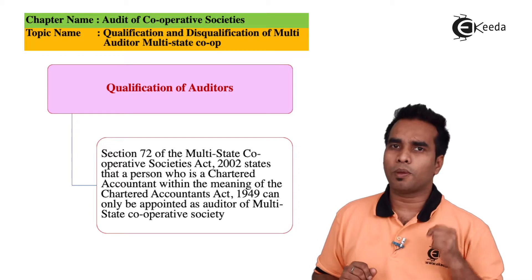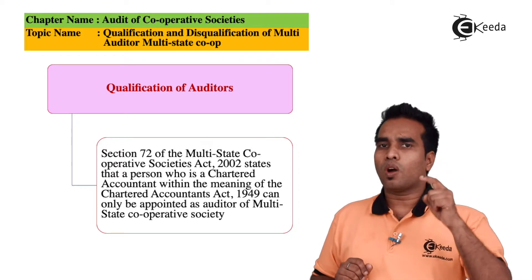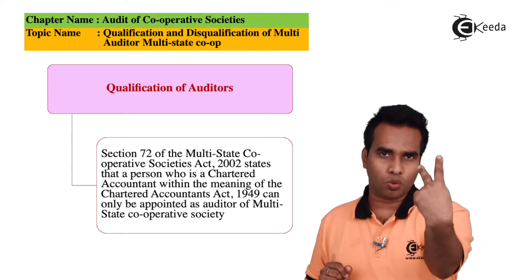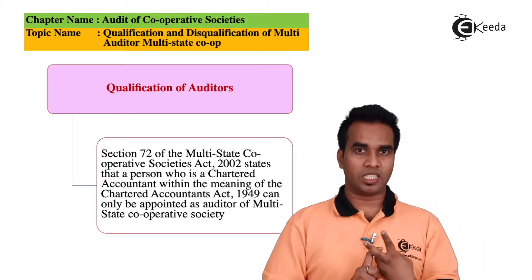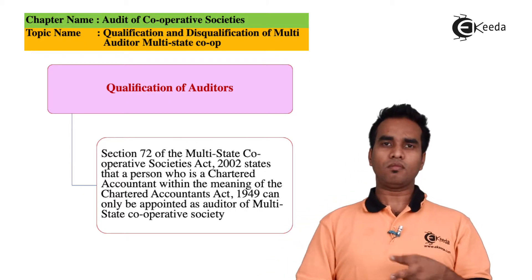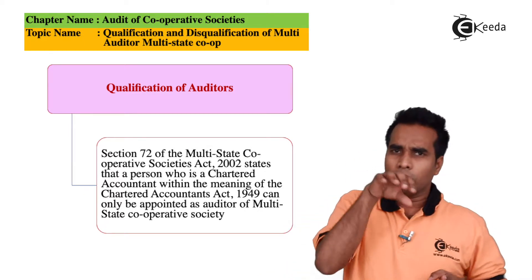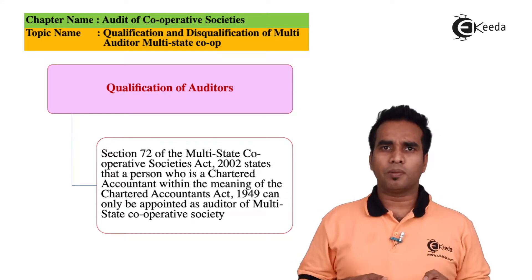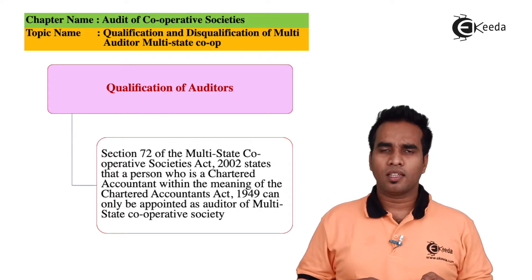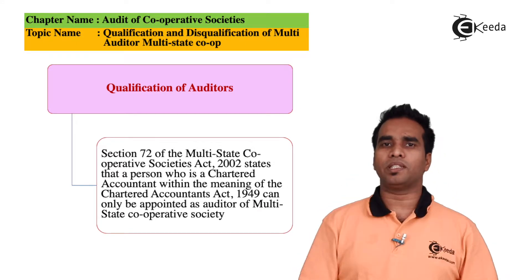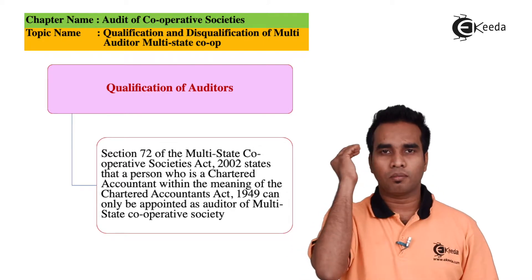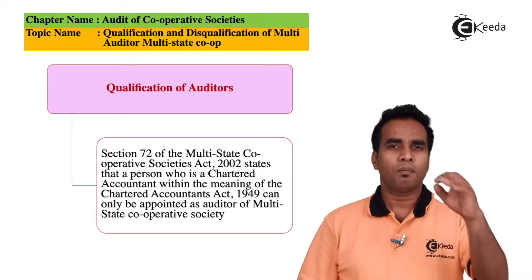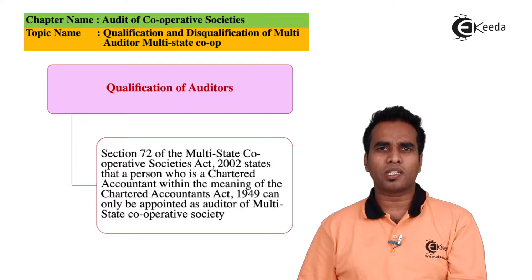In a regular cooperative society, two types of people could become auditors — one CA and one ICWA (Cost Accountant). But in the case of Multi-State Cooperative Society, only a CA can become auditor. No one else can be appointed.